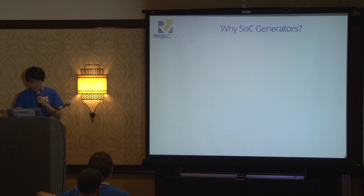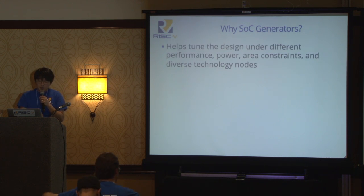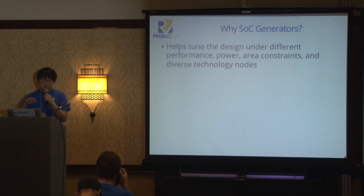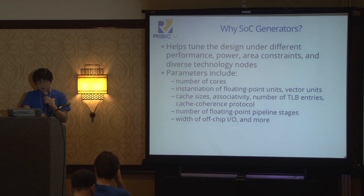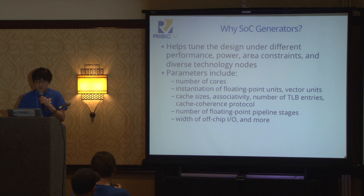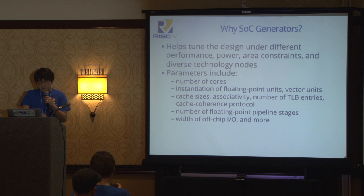Why do we write these SOC generators? It really helps tune the design under different performance, power, and area constraints. Whenever you're porting RTL to different technology nodes, it's great to change your cache size, number of pipeline stages, and even the microarchitecture for different applications. Currently the parameters include the number of cores, whether to instantiate a floating point unit or vector units, cache size associativity, number of sets, TLB entries, cache coherence protocol, number of floating point pipeline stages, and the width of the external IO — and much more.